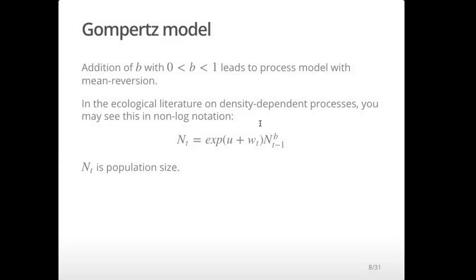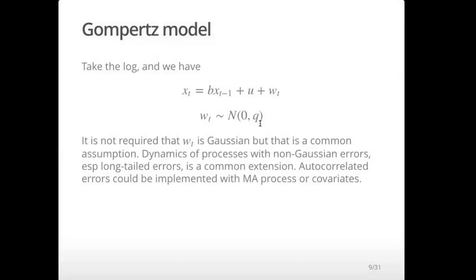The Gompertz model is a model that comes up in our field a lot too. If you look at this equation, that should be familiar now — that is an AR(1) process. And if the absolute value of B is less than one, that's going to be a stationary process — it's just going to be fluctuating around some line.